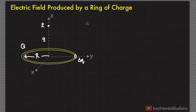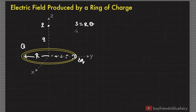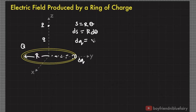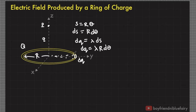Let's consider an infinitesimal element dq from the ring of charge. From geometry, recall that arc length s is equal to the radius times the angle swept — arc length s equals R times theta. So the infinitesimal element of arc length ds equals R dθ. Now dq equals linear charge density lambda times the length of this element ds, which gives dq equals lambda times R dθ.